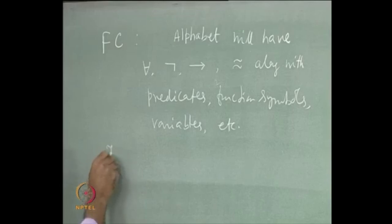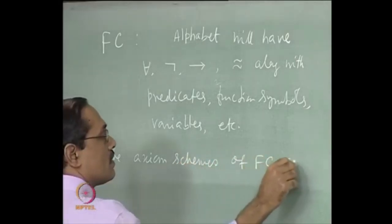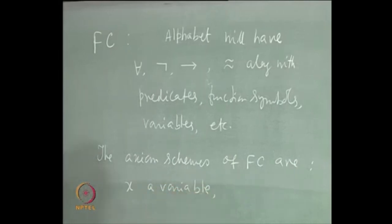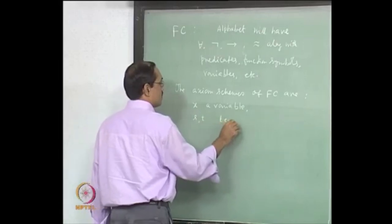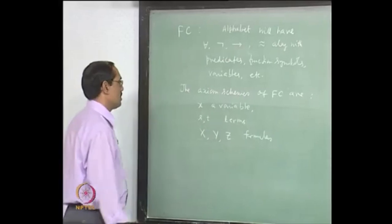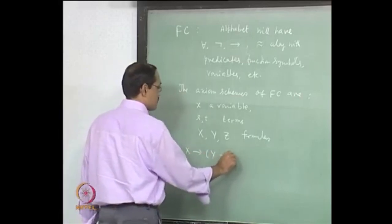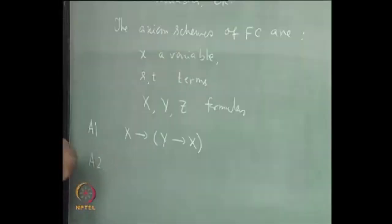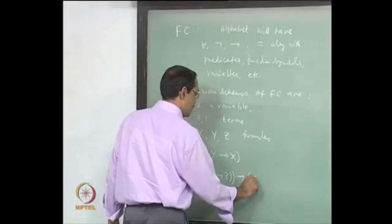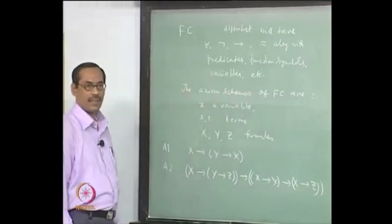We will start with the axiom schemes of FC. Here, we will be using x as a variable, S and T for terms, and X, Y, Z for formulas. The first axiom will be our earlier axiom for PC: X implies Y implies X. Next, A2 is the distribution of implication: X implies Y implies Z, implies X implies Y, implies X implies Z - just like your PC.